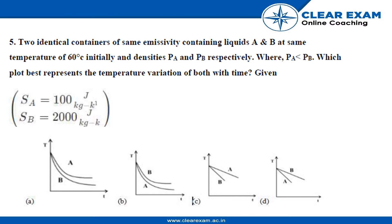The conditions are: two identical containers are given and emissivity is also same of both containers, and both containers have liquid A and B at same temperature 60 degree Celsius. So temperature is also same. Densities are Pa and Pb. Density of container A is Pa and density of container B is Pb. It's given that Pa is less than Pb.